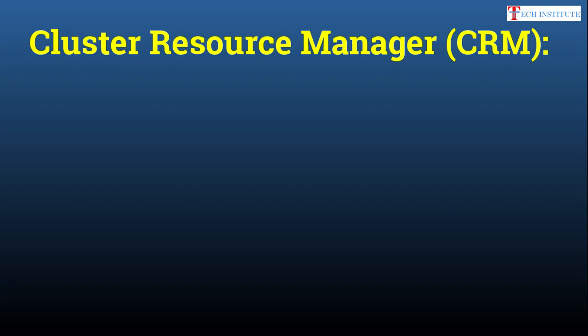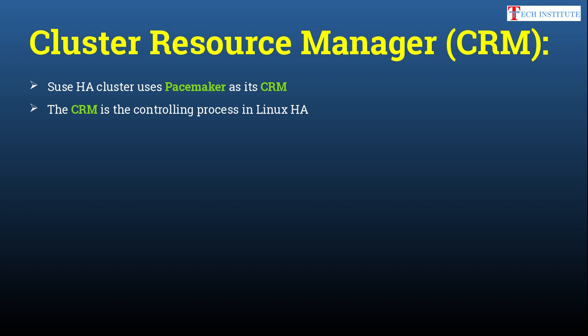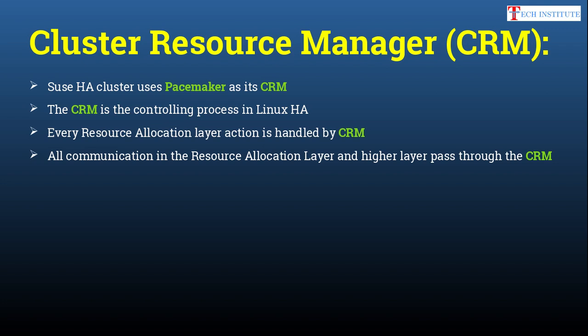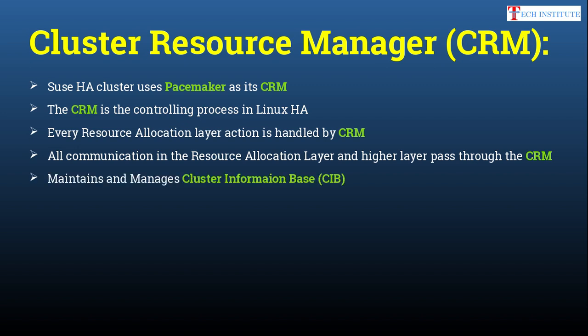First, let's look at the Cluster Resource Manager. SUSE uses Pacemaker as its CRM, so Pacemaker is the main component for resource management in the SUSE High Availability cluster. The CRM is the main controlling process in your Linux cluster — every resource allocation layer action is handled by CRM. It decides which resource will run on which node and what the state will be. All communication in the resource allocation layer passes through the CRM, and it maintains and manages the Cluster Information Base (CIB).